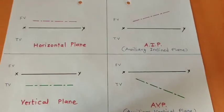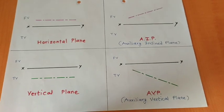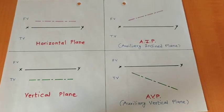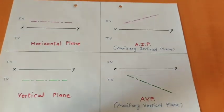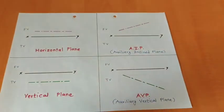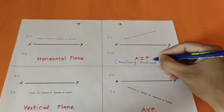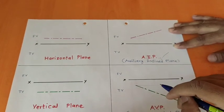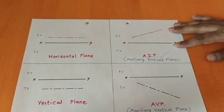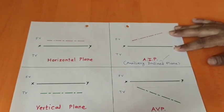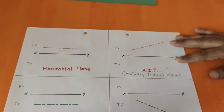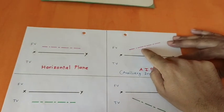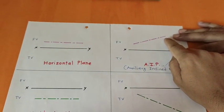Now we know all the planes: horizontal plane, auxiliary inclined plane, vertical plane, and auxiliary vertical plane. Out of these, we have auxiliary inclined plane in the syllabus. Whenever AIP or any phrase like 'plane inclined to HP and parallel to VP' appears, you have to understand that the plane can be represented in the front view.